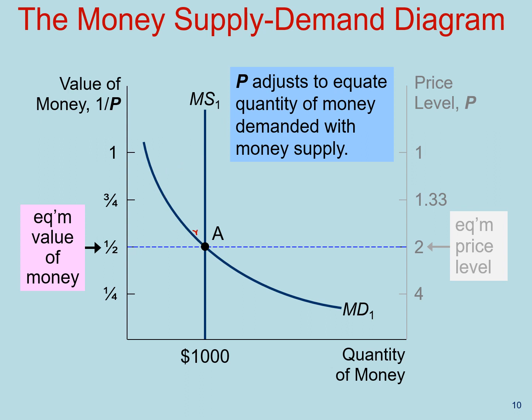Now let's think about a shortage. If the price level is equal to 4 and the value of money is one-fourth, the quantity supplied of money is well below the quantity demanded and we have a shortage. Because there's not enough money to conduct transactions, households are not going to purchase all the stock of goods and services available, and firms are going to start having sales and reducing their prices. That puts upward pressure on the value of money, increasing it back to the equilibrium of one-half, resulting in a price level of 2.